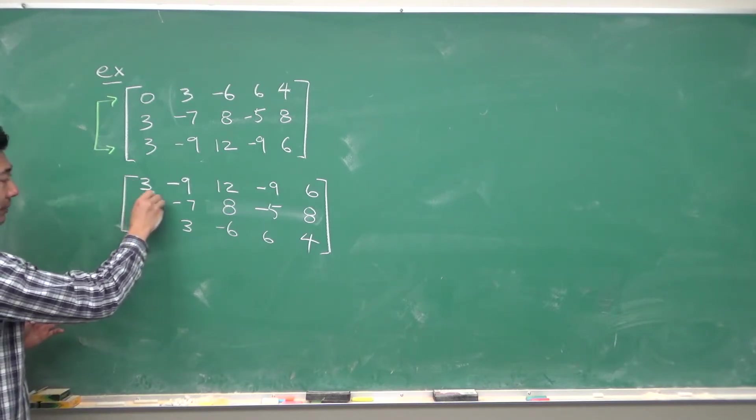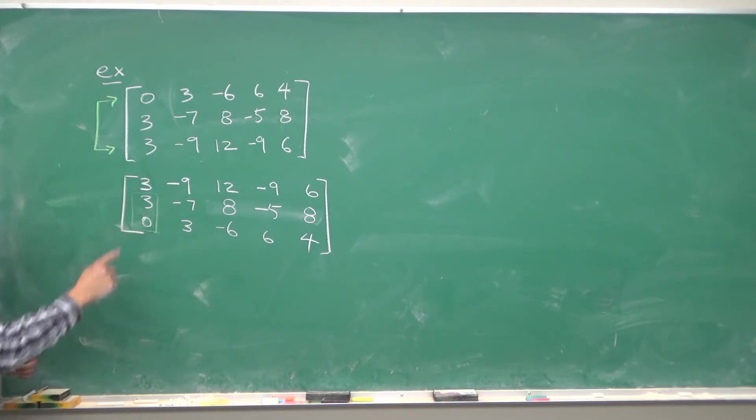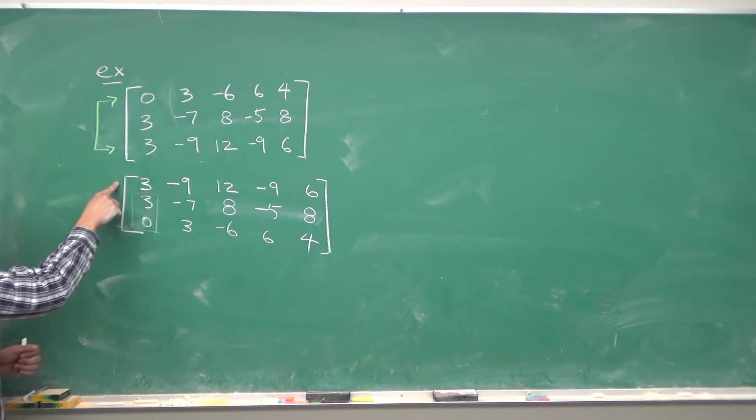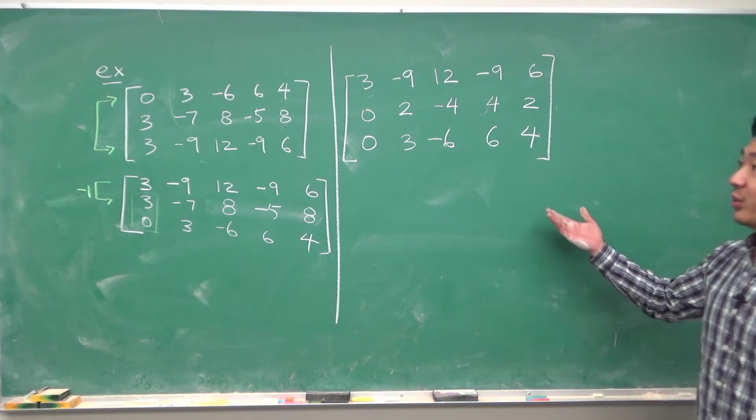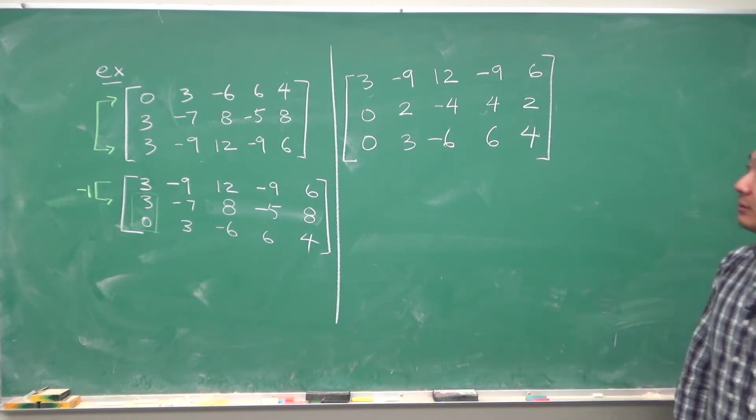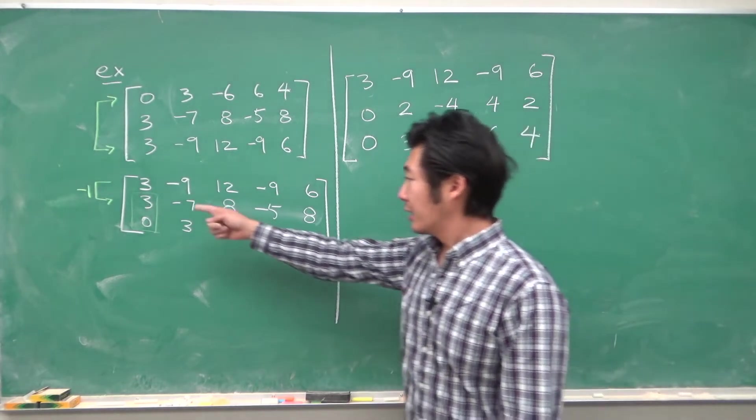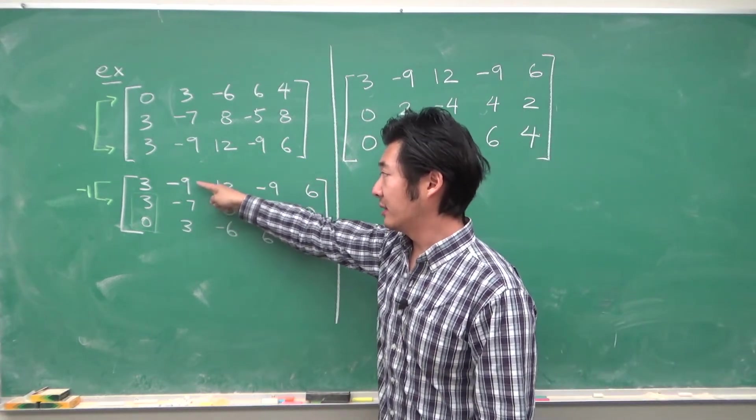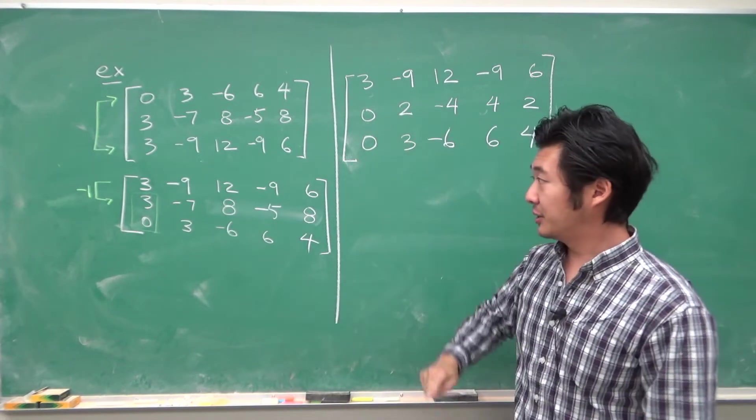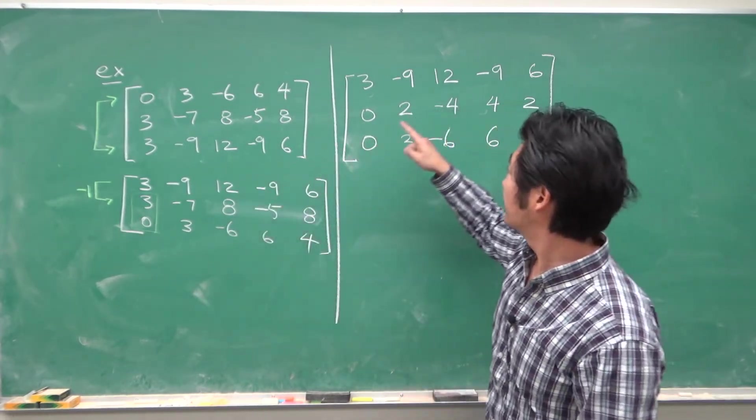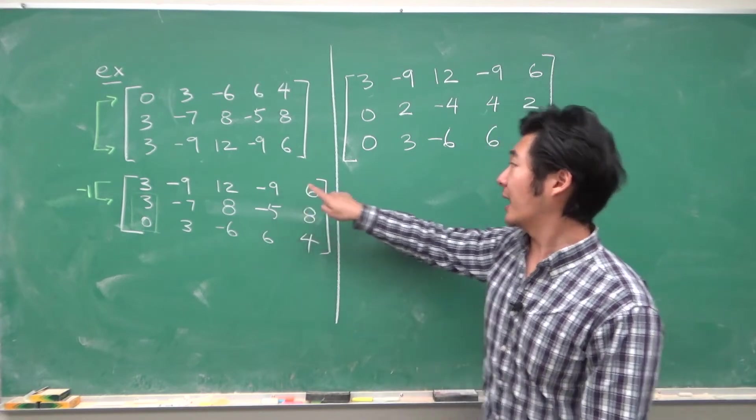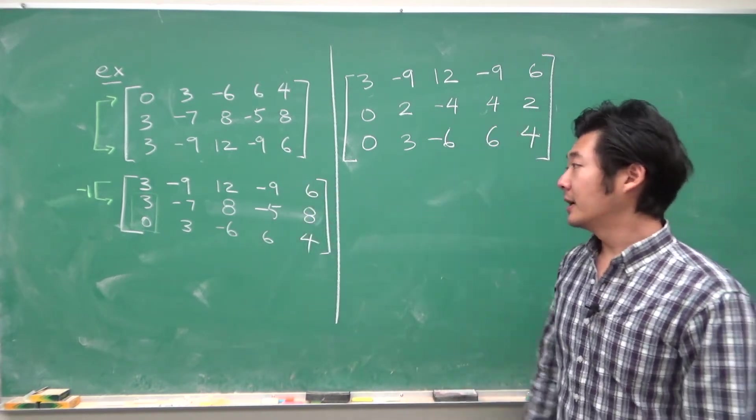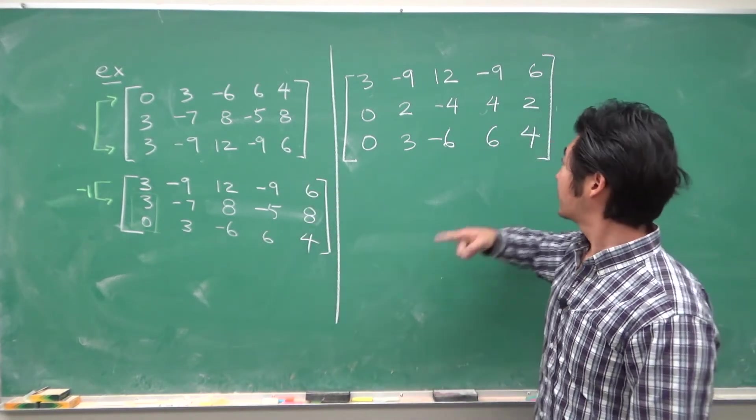So, we want to make sure that these are zeros. So, to get rid of 3, we want to do minus 1 times this entire row 1 into row 2, so that we end up with this matrix. So, how did we get this? First, 3 minus 3 is 0. And then, negative 7 plus 9 is 2. 8 minus 12 is negative 4. Negative 5 plus 9 is 4. And 8 minus 6 is 2.